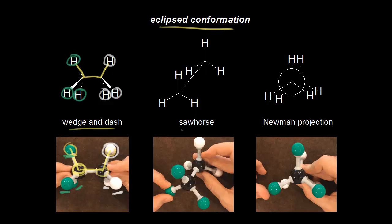For the sawhorse drawing of the eclipsed conformation, the front carbon is the one bonded to the three hydrogens in green. One green hydrogen goes up, one goes down and to the right, and one goes down and to the left. Then we have the carbon-carbon bond — I made it much longer here so the atoms wouldn't interfere with each other on our sawhorse drawing. The carbon in the back is bonded to three hydrogens in white, so here are the three white hydrogens on the picture.